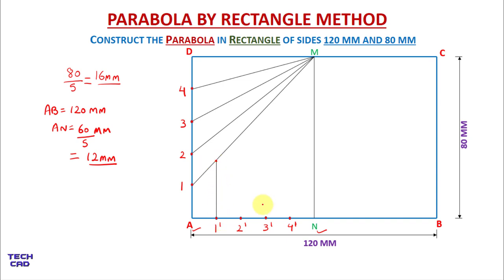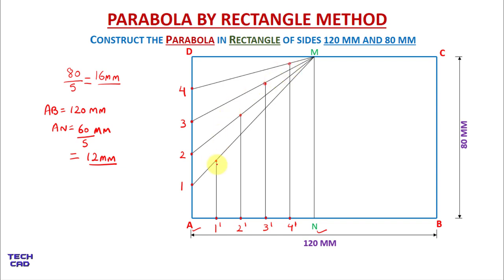From 2 dash to 2 only, from 3 dash to 3, and from 4 dash to 4. These intersection points are the points for my parabola. Now I will give namings to all these points.